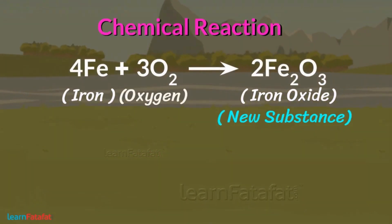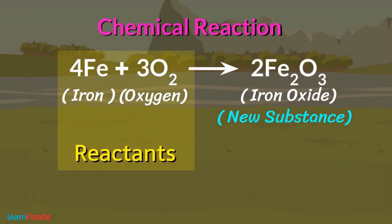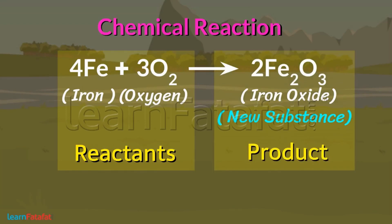The ingredients which interact to bring about the chemical change are called reactants. The new substance formed after a chemical change is the product of the reaction.